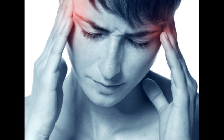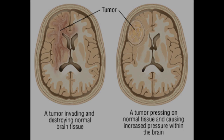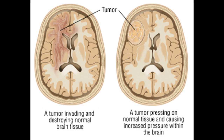Symptoms of a brain tumor vary depending on where the tumor is located and what kind of tumor it is. In general, the most common symptom of a brain tumor is headaches, but other symptoms include seizures, balance, walking, and memory problems, numbness or weakness in certain body parts, speech, vision, or hearing changes, inability to concentrate, and vomiting.